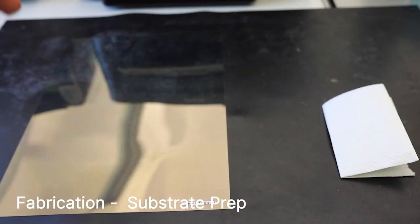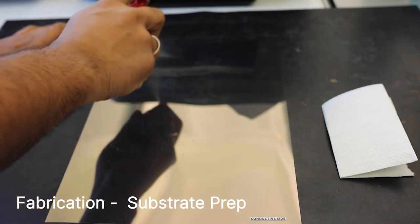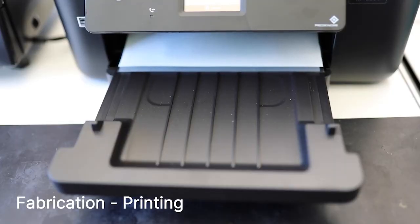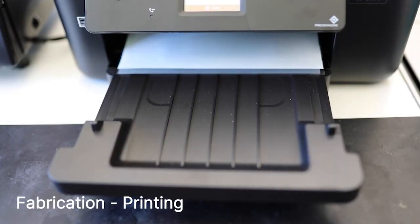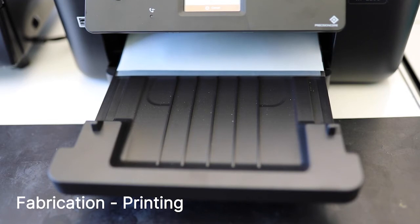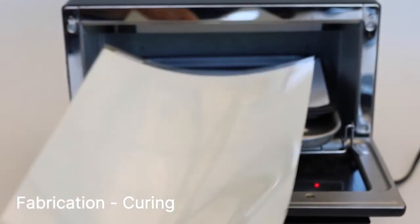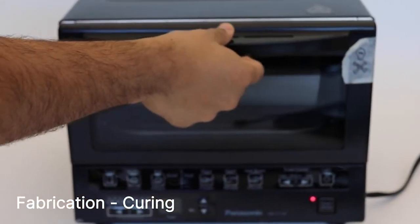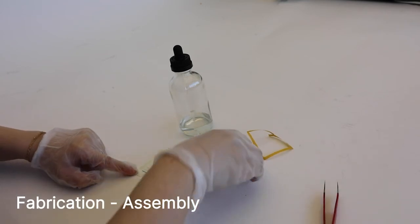In order to improve the wettability of the PET substrate, we covered it with an anti-fog spray. Once the material was ready, we printed out the desired design using the Epson WF2860 inkjet printer. We did multiple passes of printing for higher display contrast. After printing, we cured the prototype in a toaster oven at 100 degrees Celsius and ultimately assembled the prototype.